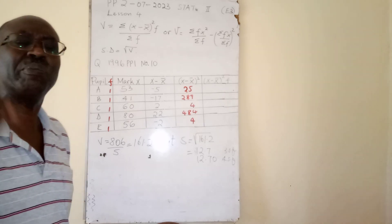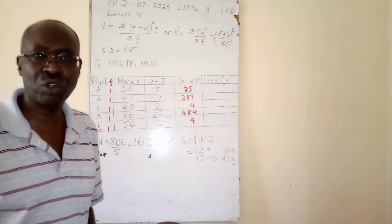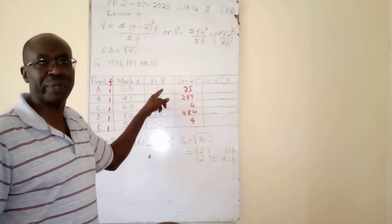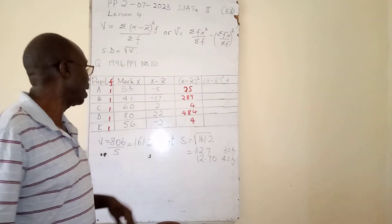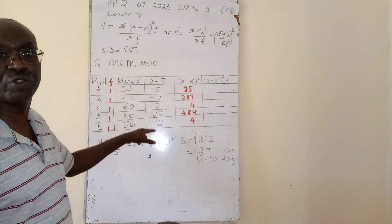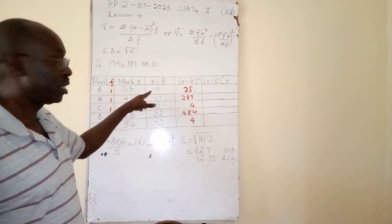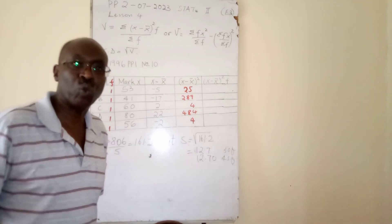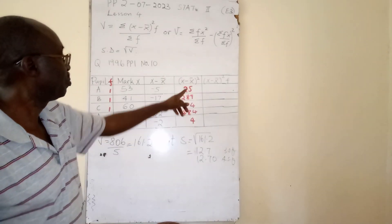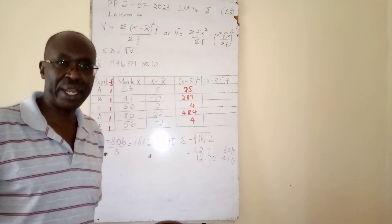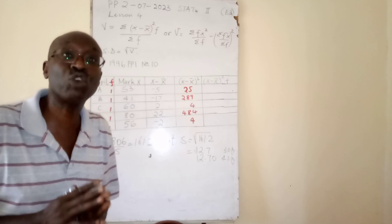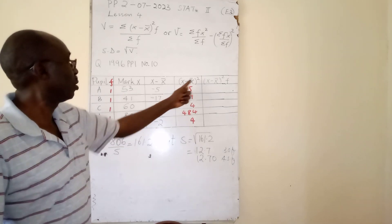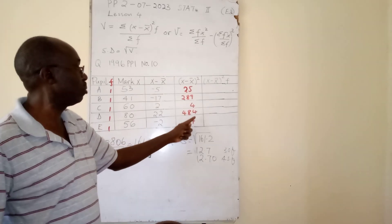This third column is labeled x minus x̄. x minus x̄ for the first student is this, second, third, fourth, fifth. We had to complete the table for one mark. What is x minus x̄ squared? x minus x̄ has already been done, you only compute the square. That operation is what is being tested, so you compute them and get this.